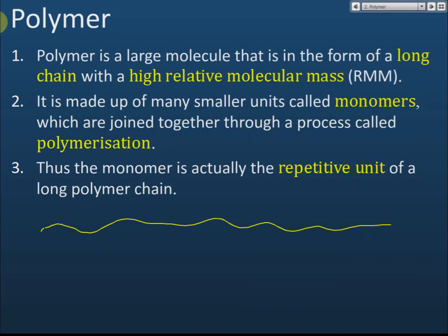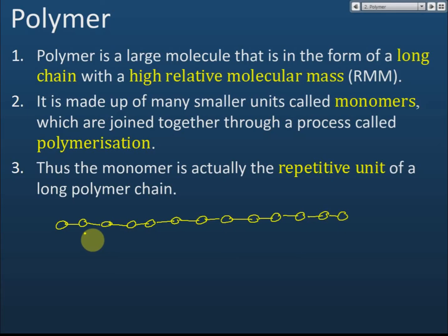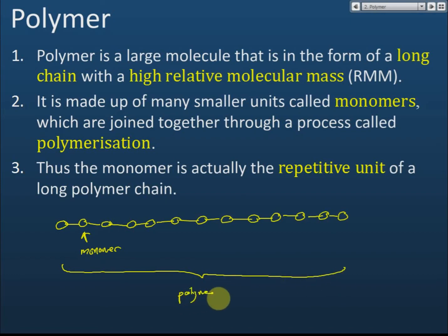The process of joining monomers together is called polymerization. We start with a smaller molecule and in a chemical reaction we join all these smaller molecules together. Each smaller molecule that is joined together to form the long chain is called a monomer. The resulting big molecule is called a polymer. 'Mono' means one and 'poly' means many.